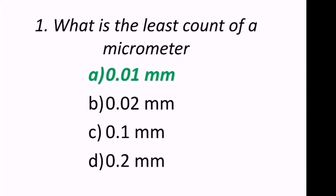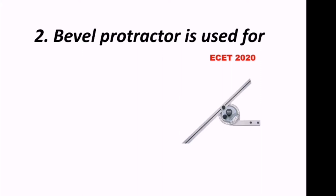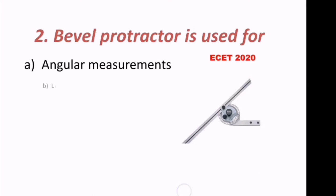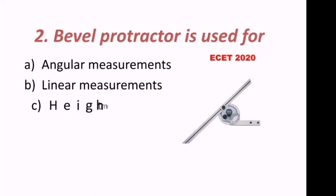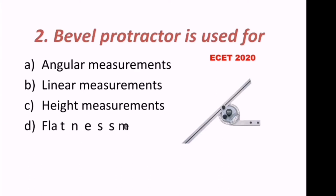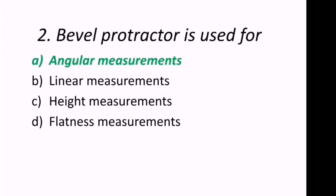Second question: A bevel protractor is used for what? This question was asked in the 2020 ESET exam. We can see the bevel protractor in the figure. The options are angular measurements, linear measurements, height measurements, or flatness measurements. The bevel protractor is used for angular measurements — A is the correct answer.